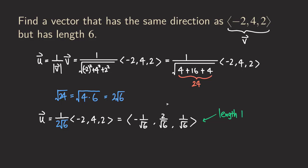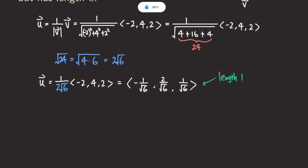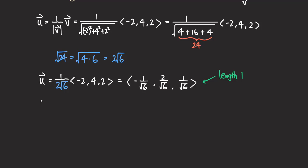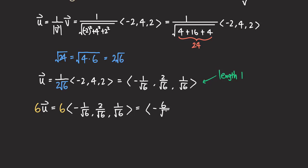But that's not the answer we want because we want a vector pointing in the same direction as v but with length six. So we simply multiply u by six to turn this vector into one of length six. So we get six times u, which is six times the vector negative one over square root of six, two over square root of six, one over square root of six. Multiplying through: negative six over square root of six, twelve over square root of six, and six over square root of six.